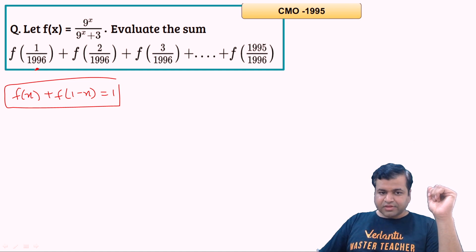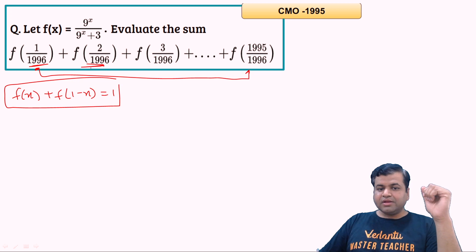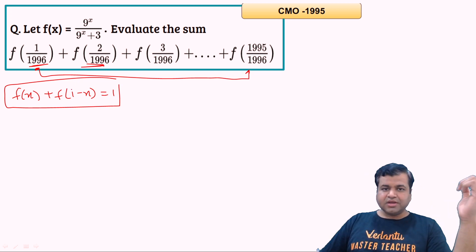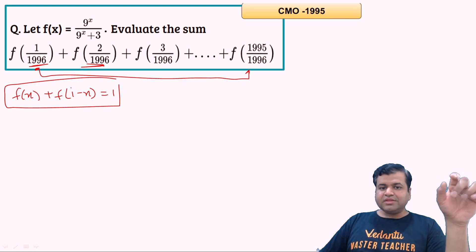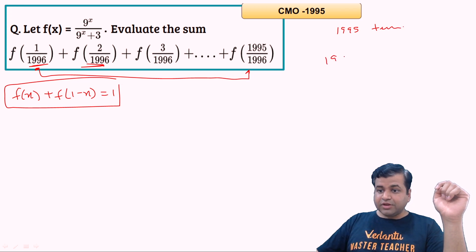Since f(x) + f(1 − x) = 1, the first and last terms pair to give 1, the second and second-last terms pair to give 1, and so on. We can form pairs. There are 1995 terms in total, so we get 1994/2 = 997 complete pairs, each summing to 1, plus one middle term.